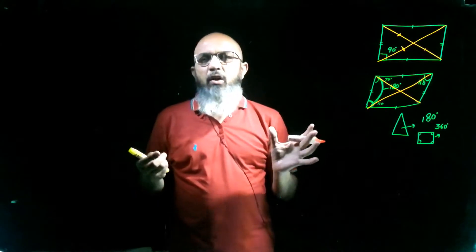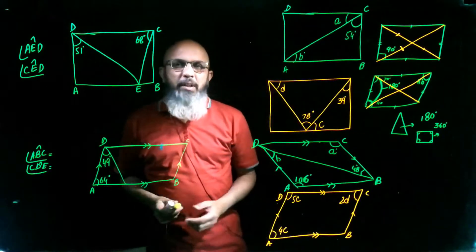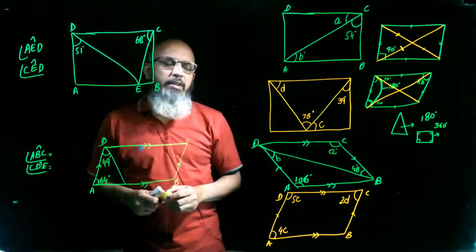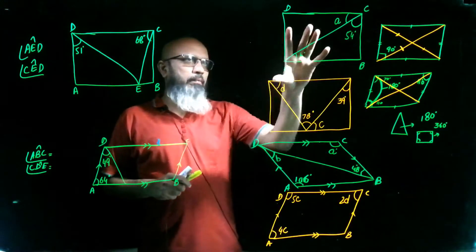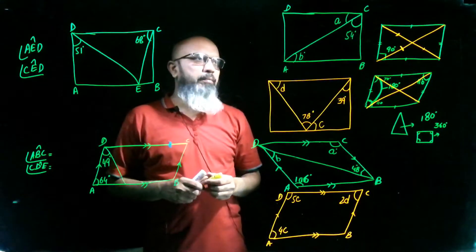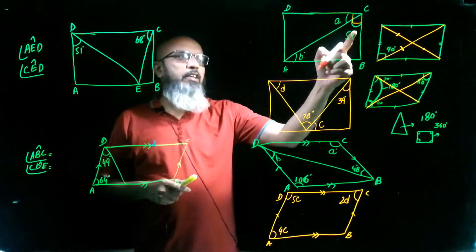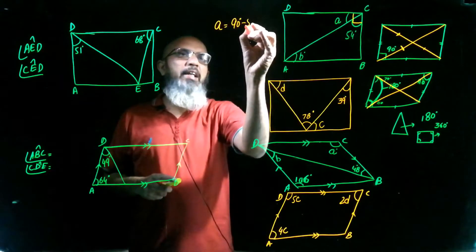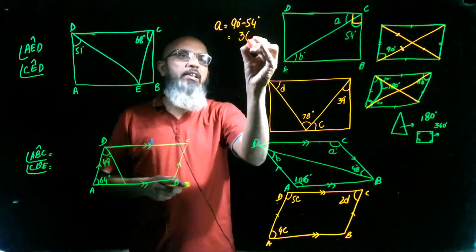Now let's solve some questions from exercise 11A and the practice now pages relating to rectangles and parallelograms. In the first question, it is a rectangle, so each angle is a right angle of 90 degrees. We need to find angles A and B. Angle C is a right angle and one part is 54 degrees, so angle A equals 90 minus 54, which gives 36 degrees.